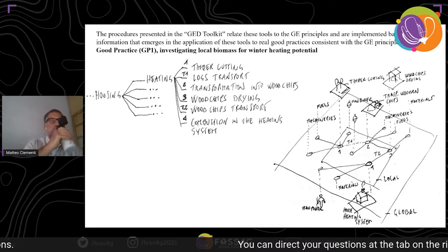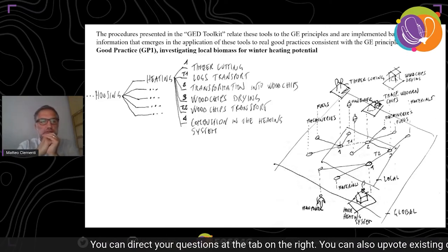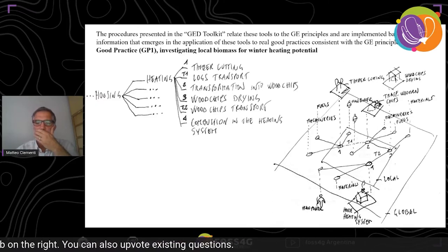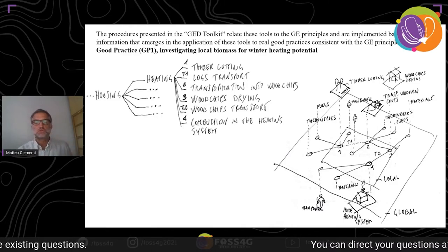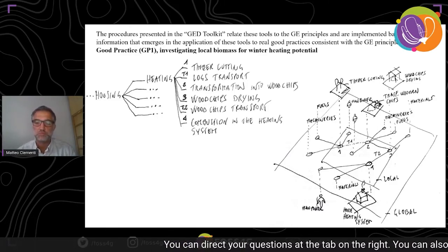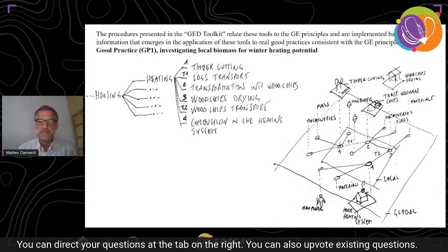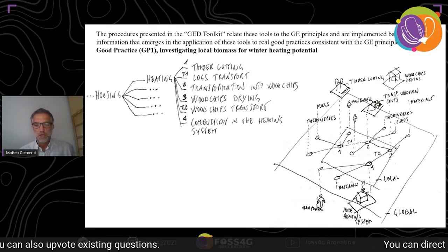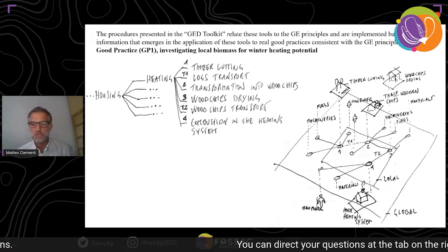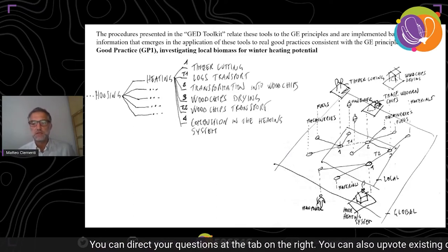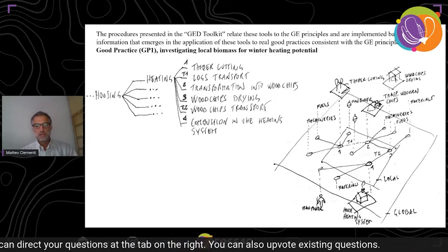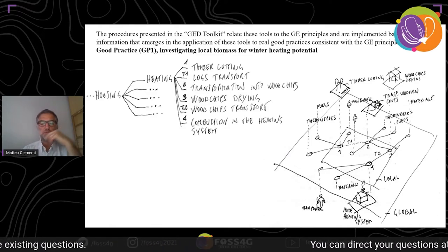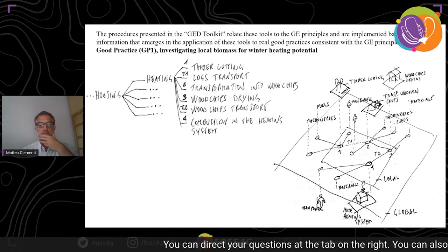The procedure presented in the JET Toolkit shows, step by step, how to build resource geographies and impact geographies, and relates these tools to generative economy principles in order to implement them in real good practices consistent with those principles. For instance, good practice number one investigates local biomass for winter heating potential. The principles of interest for this practice are in particular: sustainability, good work, community, inclusion, and place.